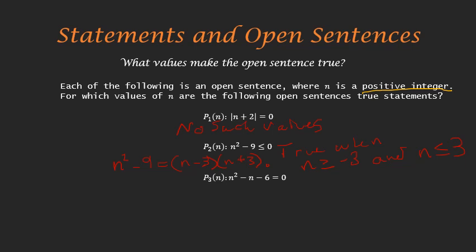Third: p3(n): n² − n − 6 = 0. We want to know when this equals 0, so we factor: n² − n − 6 = (n − 3)(n + 2). This equals zero when n = 3 or n = −2. But remember, we're only considering positive integers, so n = −2 is excluded. Therefore p3(n) is true when n = 3 — that's the only positive integer that makes this true.